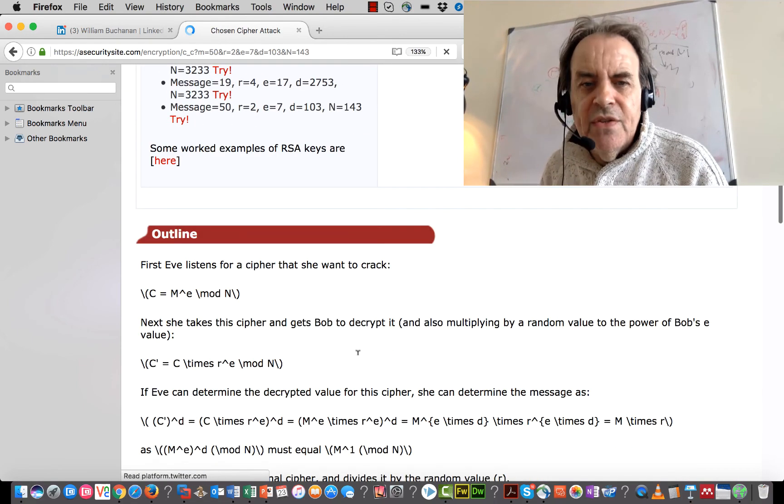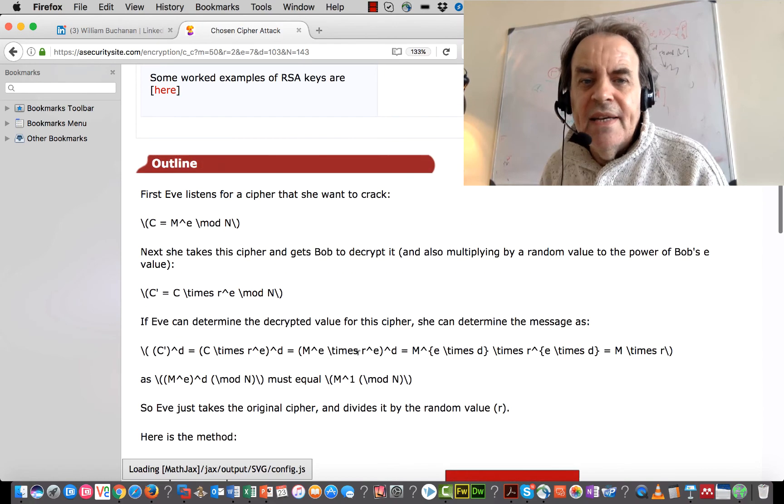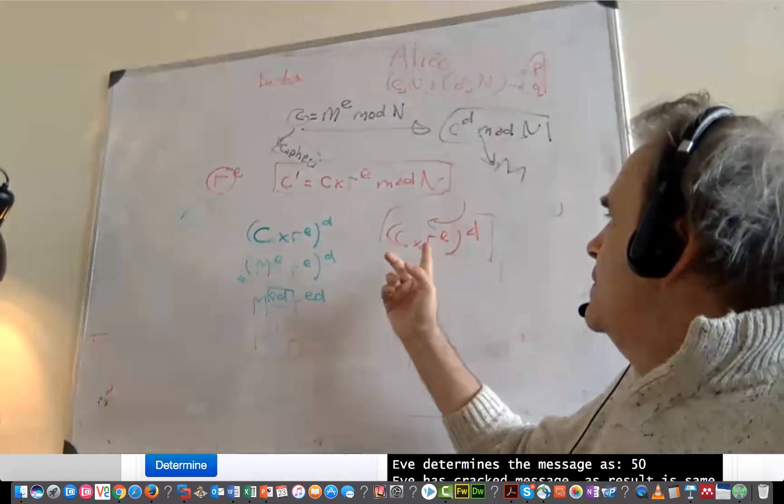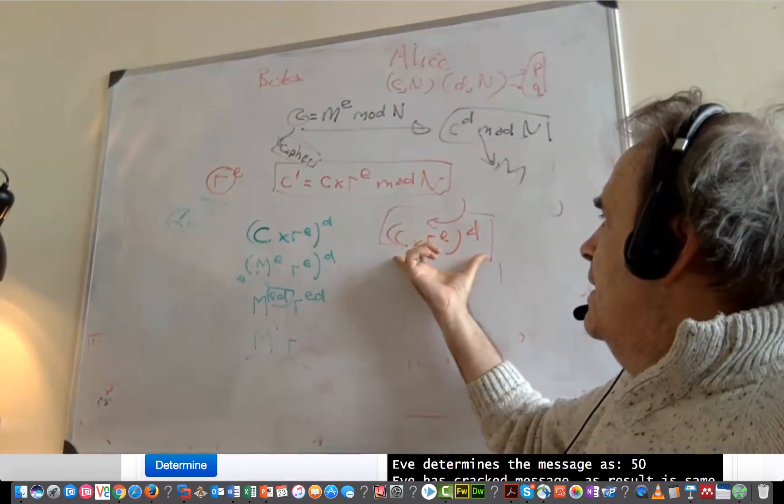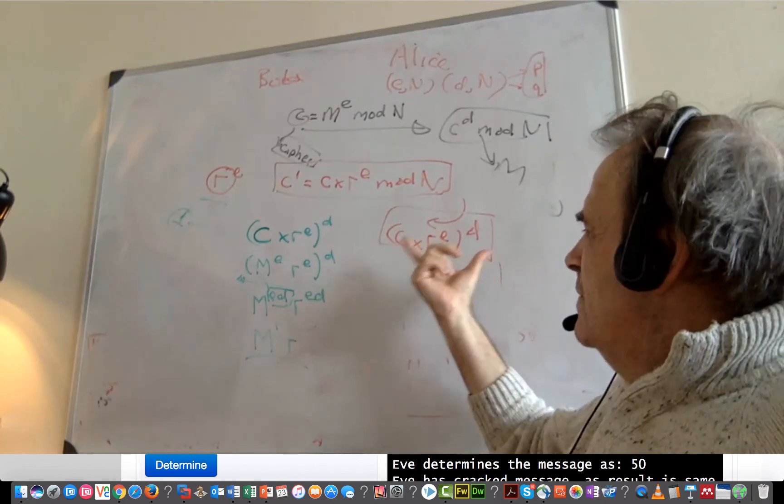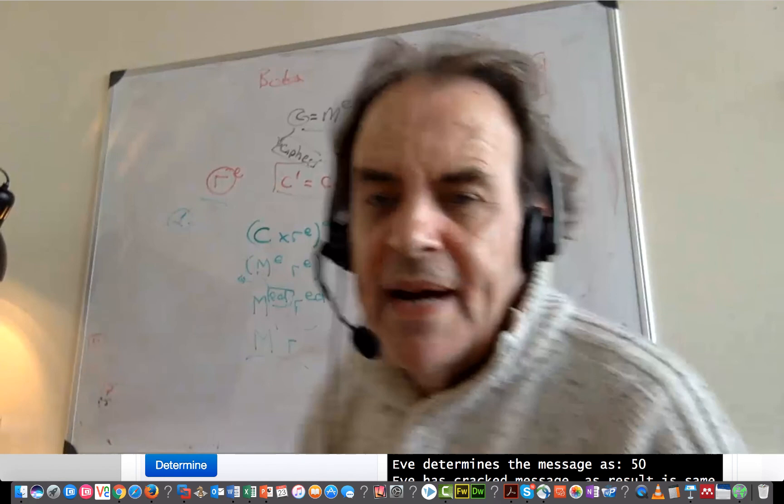So the key to this hack is that the value that's returned contains this result. So in terms of what not to do, is not to return back the result of a decryption. And that's been an overview of Chosen Cipher Attack.